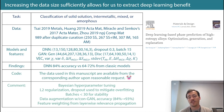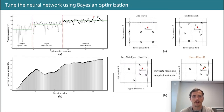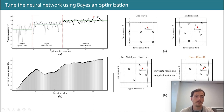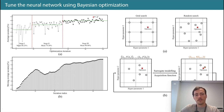They also did feature weighting with layer-wise relevance propagation — a different way to get feature importance out of a deep learning model. When it came to tuning the model, grid search is inefficient, random search is more efficient, but Bayesian optimization is an awesome approach. Good move on their part. Nowadays everyone should be doing this.